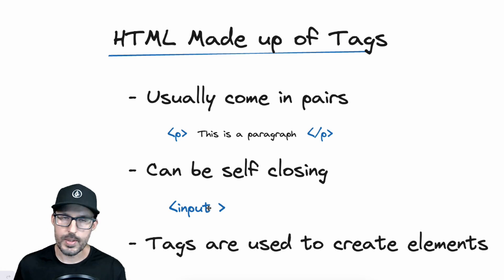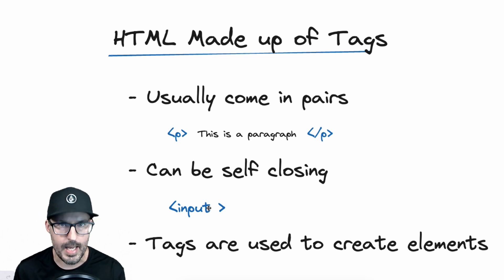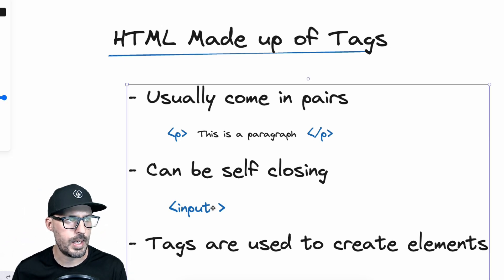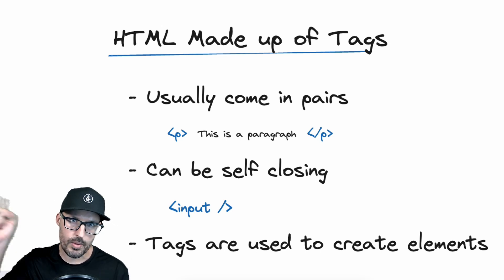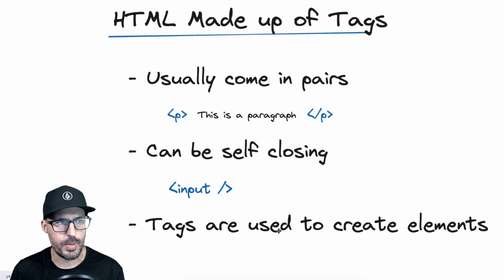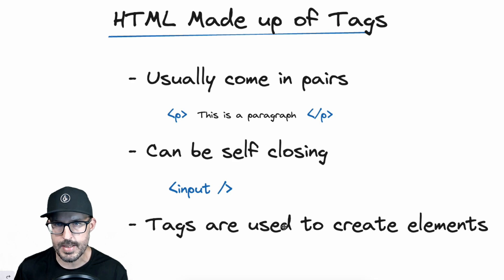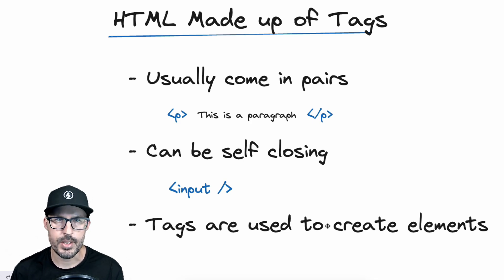Without the forward slash it looks a little weird, but the browser intrinsically knows it's an input tag and that it never contains content, so it doesn't need to be closed. The forward slash is just a leftover relic from XHTML days, which you can learn more about in the linked video. So the tags themselves are used to create elements — the tags aren't elements themselves, but when rendered in the browser, they essentially become elements that we can work with and interact with on a web page.